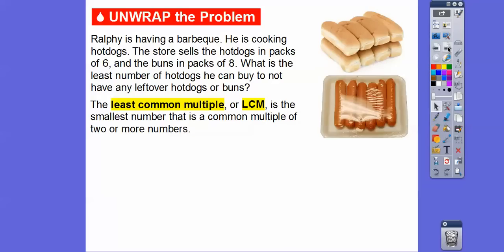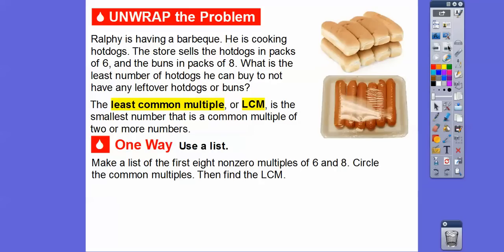A least common multiple is the smallest number that is the common multiple of two or more other numbers. We're going to find the LCM of six and eight. One way is to make a list of the first multiples of six and eight — we'll do the first eight multiples. Note that zero is a multiple of all numbers, so we won't include zero. Then we'll circle the common multiples and find the LCM.